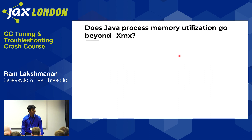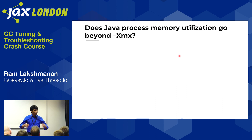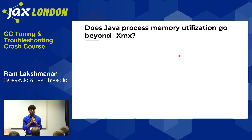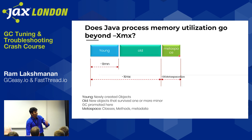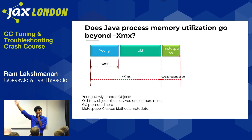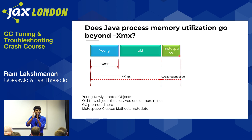If you configure XMX — say 2 GB — will your overall Java process memory utilization go beyond 2 GB? The answer is yes, it will go beyond whatever you set as the XMX limit. And there is no single argument to set a hard ceiling for the overall Java process memory.